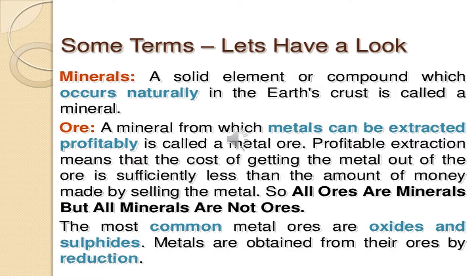And what is ore? Ore is the mineral from which metals can be extracted profitably, and it is called metal ore. Most metals are obtained in nature in the form of oxides and sulfides, and these metals are obtained from their ores by reduction. So keep it in mind — from metal oxide, when metal oxide is reduced, we get the metal. Reduction is one of the important processes. Children, you have to understand: all ores are minerals, but all minerals are not ores.